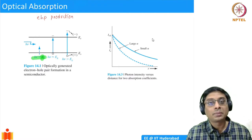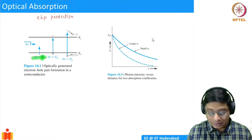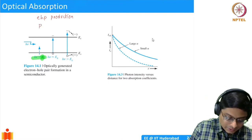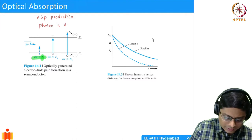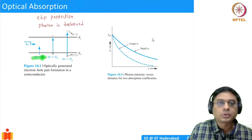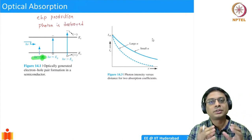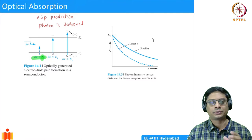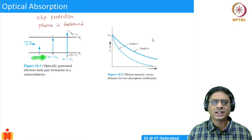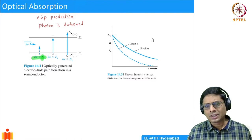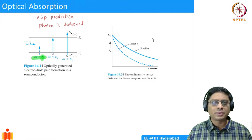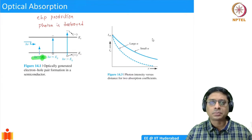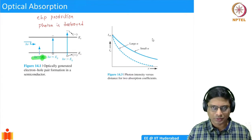What happens to the photon? The photon is annihilated — it is destroyed. The photon is essentially an energy packet, and its energy is consumed during the process of breaking the bond. There is no more photon.